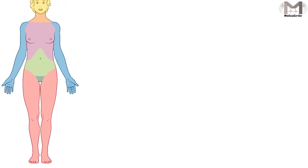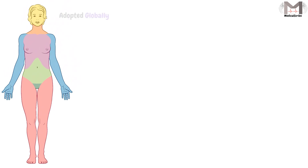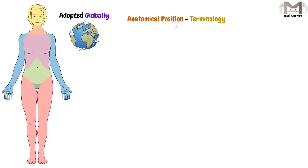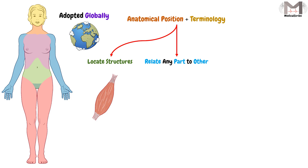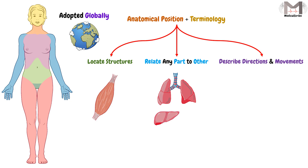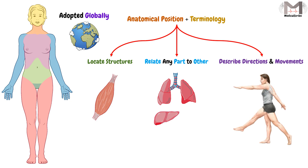This is the standard anatomical position that is adopted globally. That means all persons who describe the human body must use this position. So if we use this position with appropriate terminology, we can locate all structures' locations and relate any part of the body precisely to any other. We can also describe all directions and movements, like if the person flexes or extends his arm, because it will be based on this anatomical position.